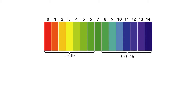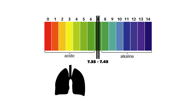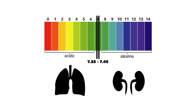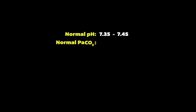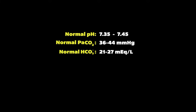As we talked about before, pH is maintained in a tight range between 7.35 and 7.45. This is done by respiratory and renal mechanisms through changes in bicarb and carbon dioxide. It is important to know the normal ranges of these molecules in the human body. The normal PaCO2 range is between 36-44 mmHg, and the normal bicarb is between 21-27 mEq per liter.